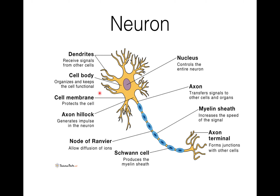There is a cell membrane which protects the cell. There is an axon hillock which helps in generating impulse in the neuron. In the axon you can see nodes of Ranvier, which allow diffusion of ions. These are gaps in the myelin sheath which help in the conduction of nerve impulse. The myelin sheath consists of fibers with a fatty coating, and it speeds up nerve impulse transmission — it increases the speed of the signal.